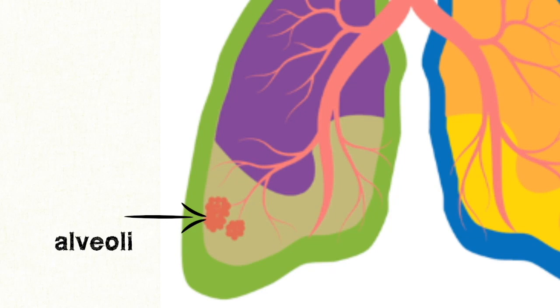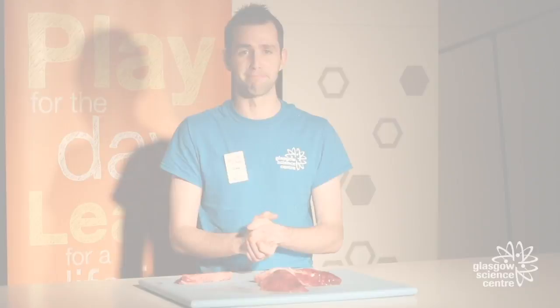Eventually the bronchioles become so small that they can only be seen under a microscope, and at this point they become alveoli — the tiny air sacs at the end of our bronchial tree. Attached to the alveoli are capillaries, where fresh oxygen is passed into our bloodstream and finally pumped around our body using our heart. So there you go — the bronchial tree. If you liked what you've seen, you can come to Glasgow Science Centre and see lung dissections for yourself, make your own set of lungs, or have a look at other experiments on our YouTube channel. Thank you so much for watching.